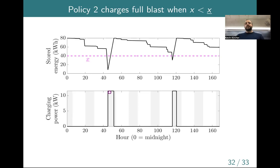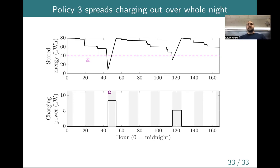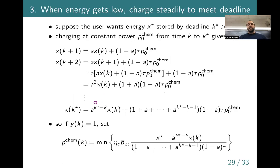Just to clarify on policy three: if we're trying to meet the deadline, you mentioned last class that if it was physically impossible to meet the deadline, we would just charge full blast and get as close as possible before the deadline. That's right — the way the equations for policy number three are written, if the user sets an unachievable deadline, like the battery is totally empty and they say in two hours I want it totally full but you can't charge that quickly, then you charge full blast to get as close as possible.